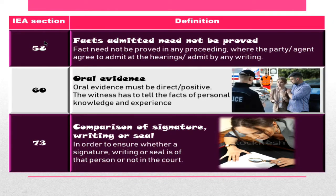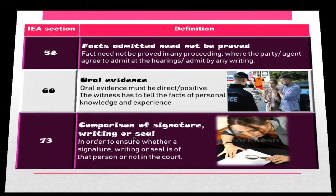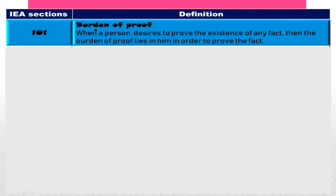Section 58 IEA talks about facts admitted need not be proved — once a fact has already been admitted in a hearing or in written form in an agreement, it is not necessary to prove it. Section 60 IEA talks about oral evidence, which must be direct and positive — the witness must tell facts he has actually seen and personally experienced. Section 73 IEA deals with comparison of signature, writing, or seal, which is usually done by an expert, but the court also has the right at any time to ask for and compare a signature, writing, or seal.